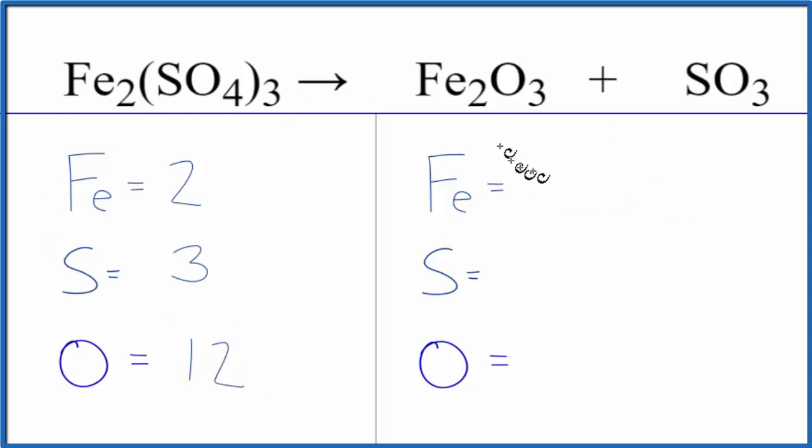On the product side, we have two iron atoms, one sulfur, and three oxygen. Plus, make sure you count the three oxygens here in the SO3, so we have six oxygen atoms.